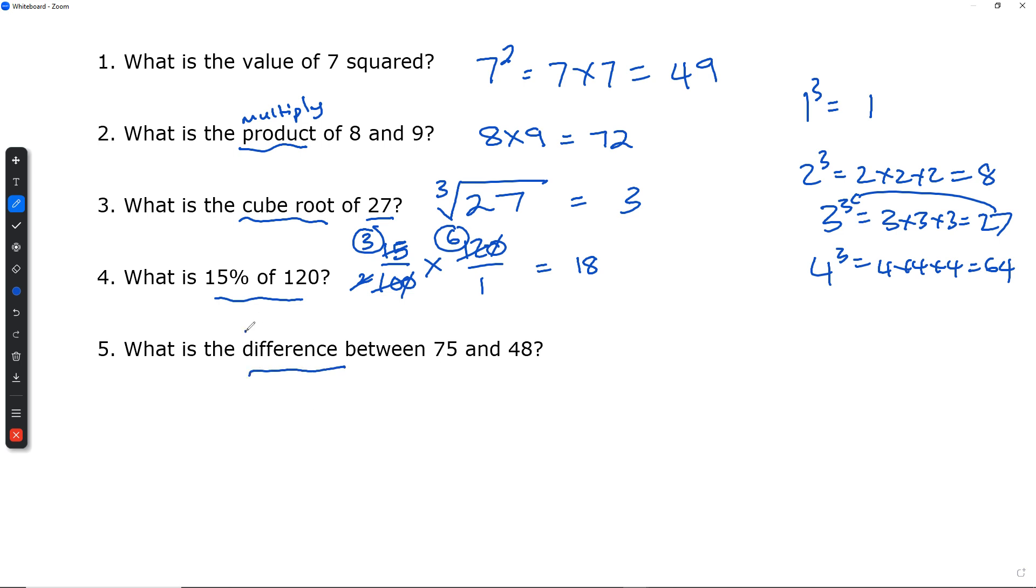Difference. What does difference mean? Difference means minus. What is the difference between 75 and 48? 75 minus 48. 5 minus 8, you can't. You've borrowed. It becomes 6. 15 minus 8 is 7, and 6 minus 4 is 2. And the final answer here is 27.